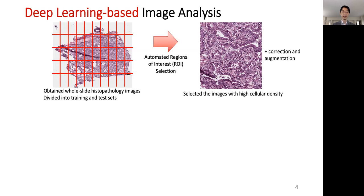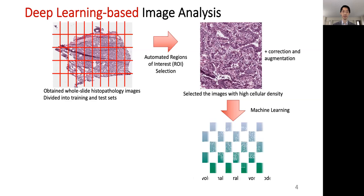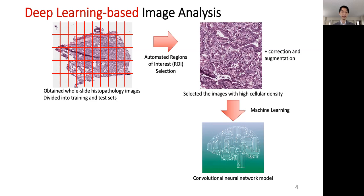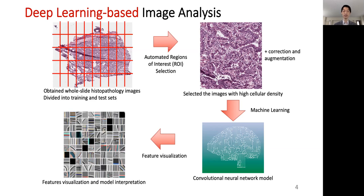Once we have collected the regions of interest, we feed these selected views into machine learning models — in this case, a deep convolutional neural network model — to connect the images with our outcomes of interest. We further visualize the features in our models to better interpret what's going on and why our models perform well in clinical applications, and we interpret these models accordingly.